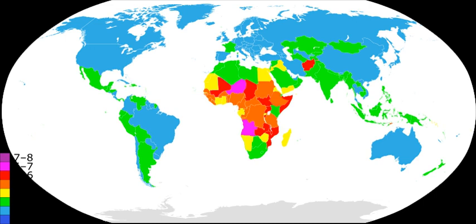Opinions vary among economists about the effects of population change on a nation's economic health. U.S. scientific research in 2009 concluded that the raising of a child cost about $16,000 yearly — $291,570 total for raising the child to its 18th birthday.